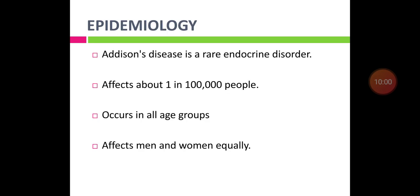Regarding the epidemiology of primary adrenal insufficiency, also called Addison's disease: it is a rare endocrine disorder, affecting one in every one lakh individuals, occurring in all age groups, and equally affecting both men and women.